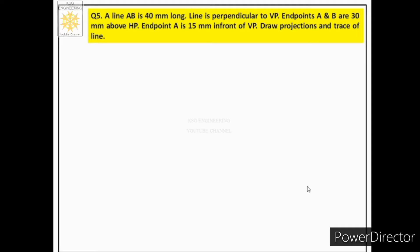Now let us discuss the last case of line. A line AB is 40 mm long. Line AB is perpendicular to VP. Endpoints A and B are 30 mm above HP. Endpoint A is 15 mm in front of VP. Draw projections and trace of line.